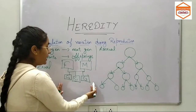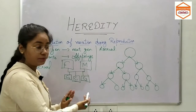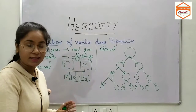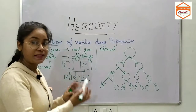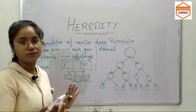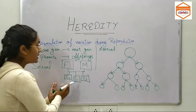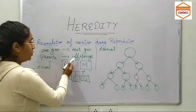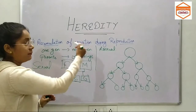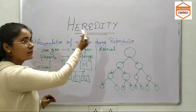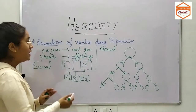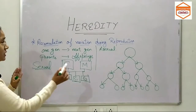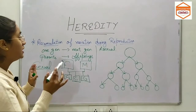Now, do you think these three siblings would have the same characters, same features, same kind of behavior, same kind of habits? No, that is not possible. These three individually would receive different characters from their parents, or from their grandparents, or from their great-grandparents. So this is how the variations occur in sexual reproduction.